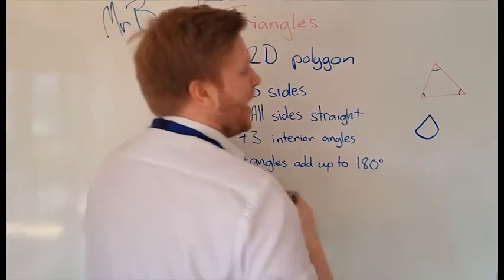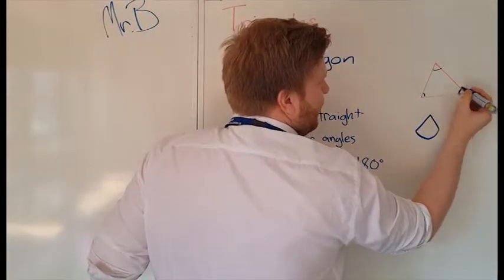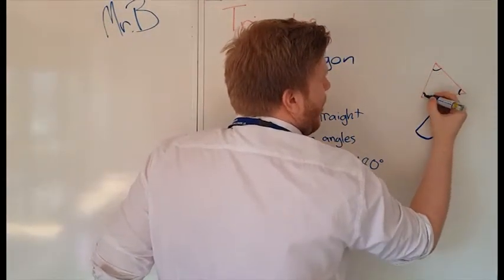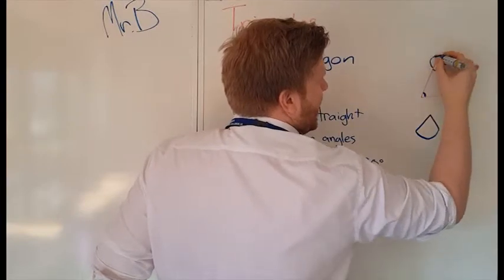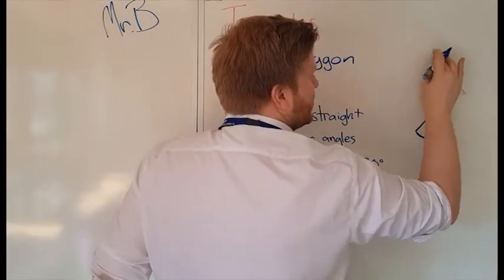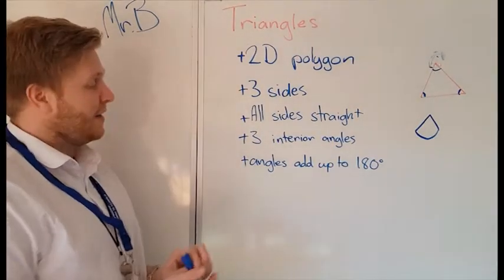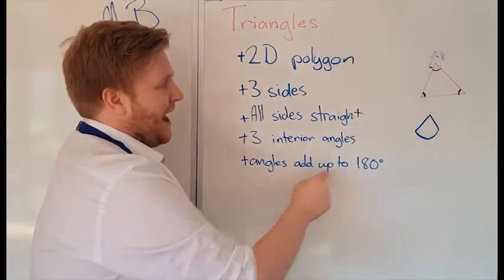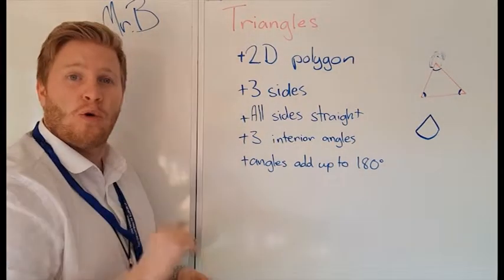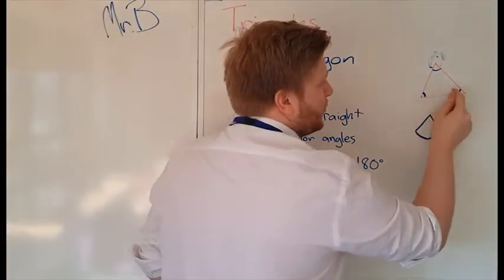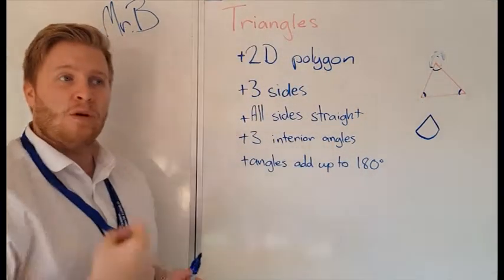It also has three interior angles. What we mean by interior angles is they're on the inside of the triangle, not on the outside. So it has three interior angles and what we also know about triangles is all the angles add up to 180 degrees. No matter what triangle it is,